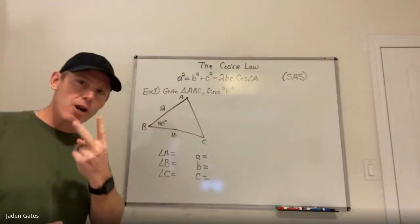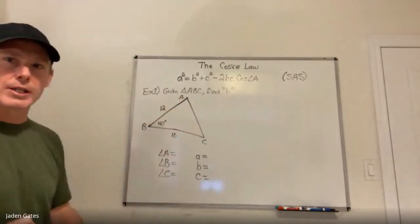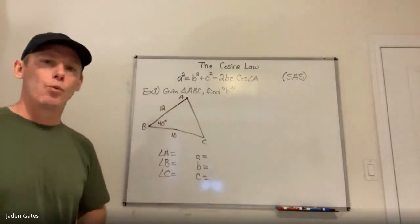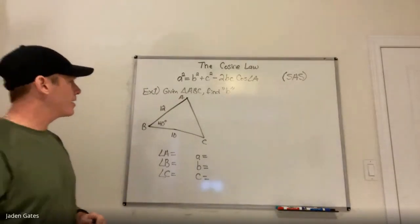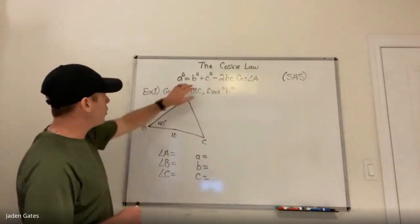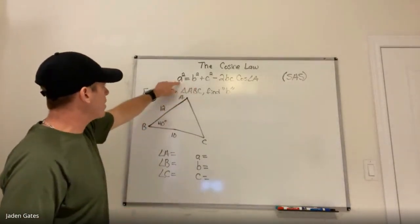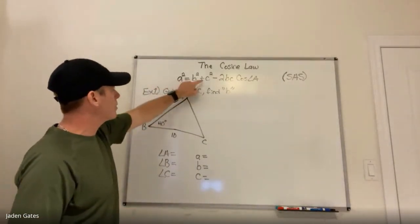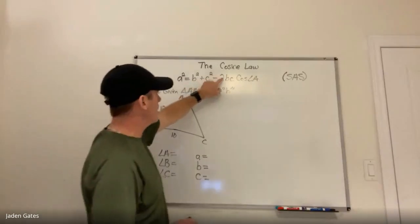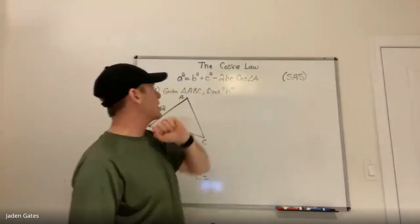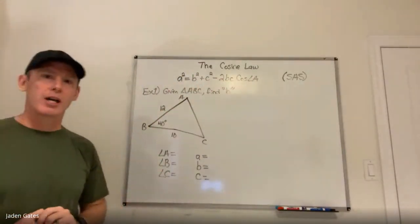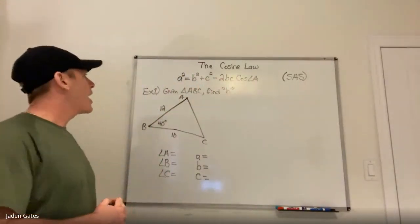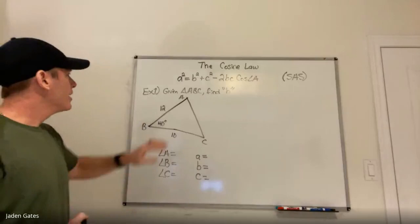There are two scenarios — we're going to do one today and one next class. The cosine law is: a squared equals b squared plus c squared minus 2bc times the cosine of angle A.